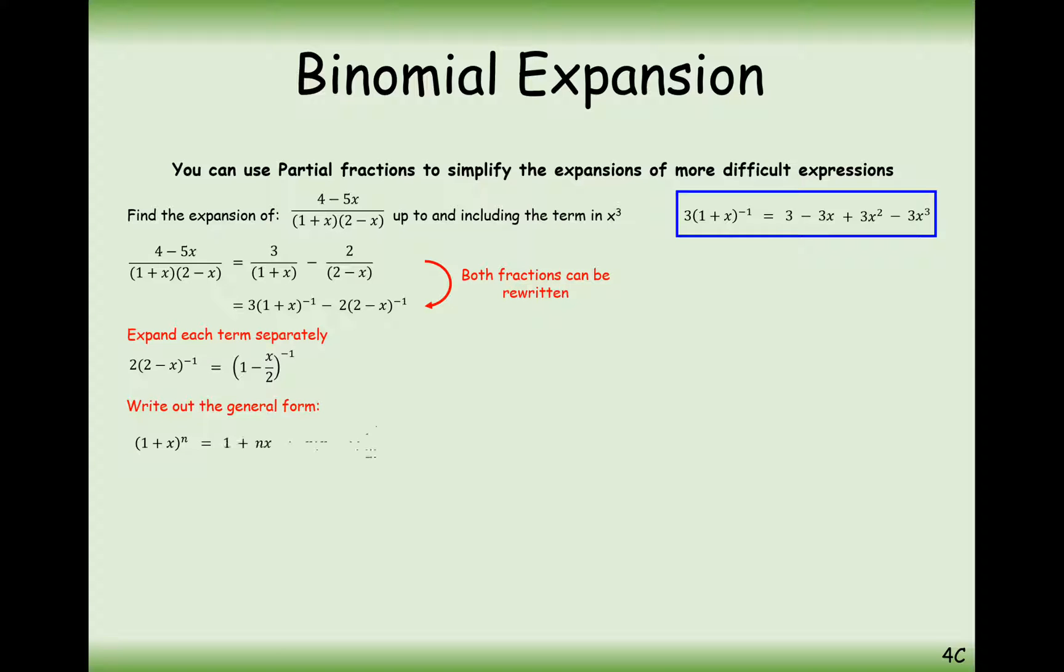Let's have a look at this now. Substituting this into the binomial expansion, x is going to be represented with a minus x over 2, and n is minus 1. So substituting those into the formula and simplifying, 1 plus x over 2 plus x squared over 4 plus x cubed over 8.